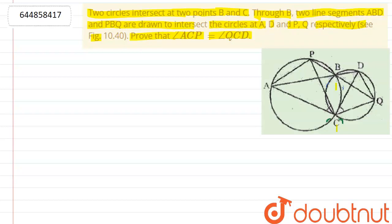So here, two circles intersect at B and C. Line ABD passes through point B and line PBQ also passes through point B. We have to prove that angle ACP is equal to angle QCD.